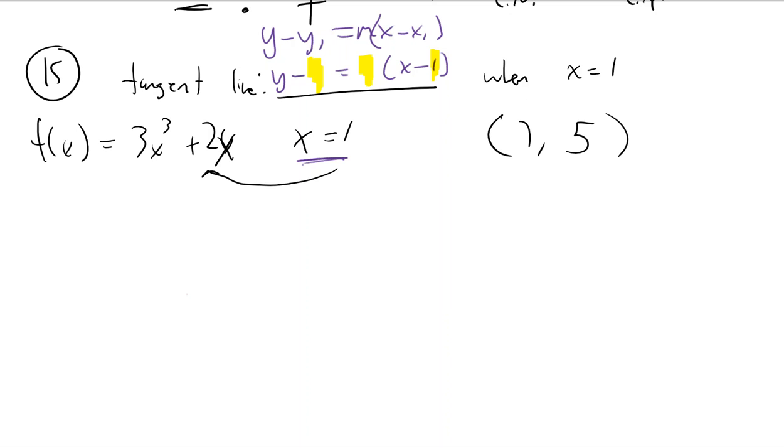So, now that I know y is 5, it's going through (1, 5), I've got two of the three things I need for my answer.